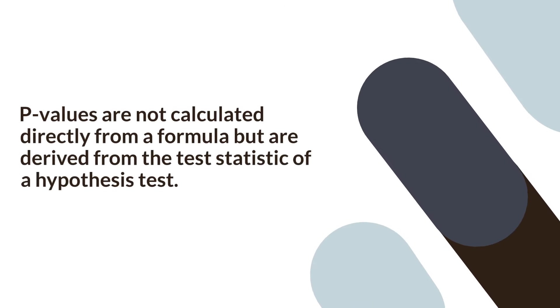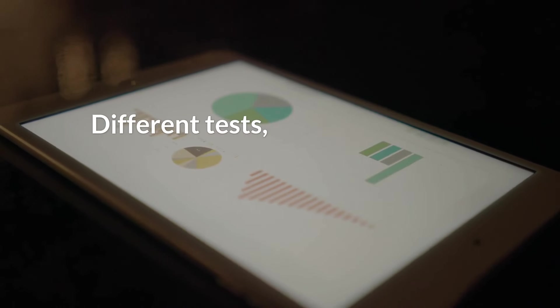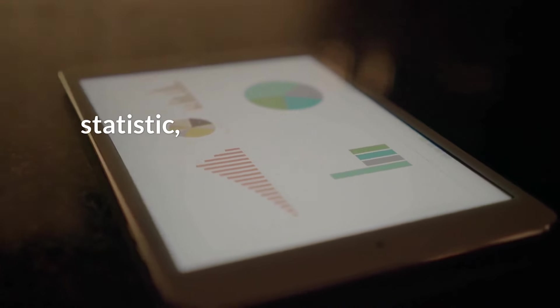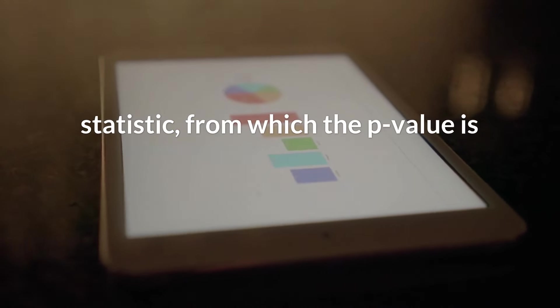P-values are not calculated directly from a formula, but are derived from the test statistic of a hypothesis test. Different tests, such as t-tests or chi-square tests, have their own formulas to calculate a test statistic, from which the p-value is obtained.